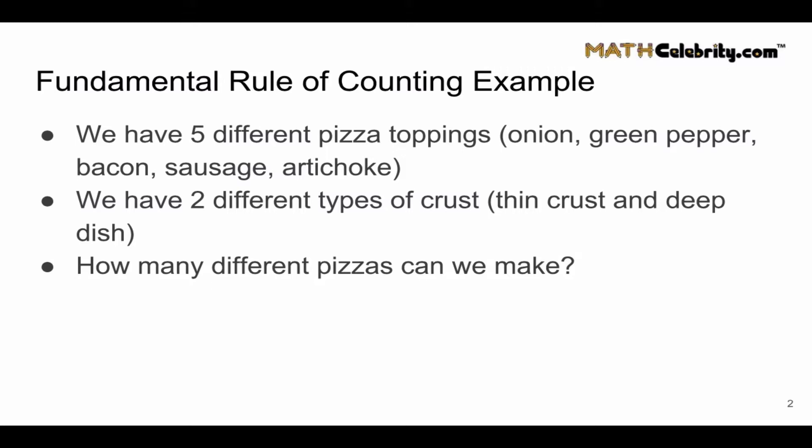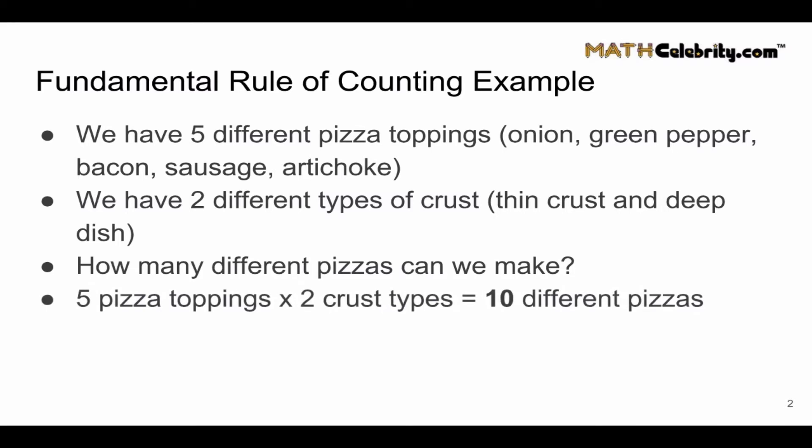To answer this, we're going to use the fundamental rule of counting, or the rule of product. We have five potential pizza toppings and two possible crust types, so we have 10 different types of pizzas — because we multiply our five different pizza toppings times our two possible crust types to get 10 different pizzas.